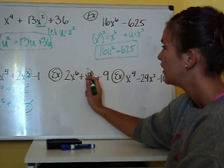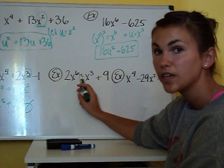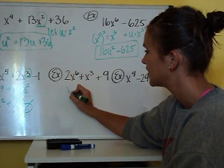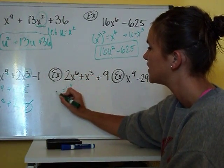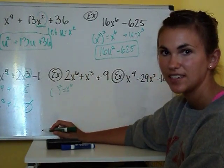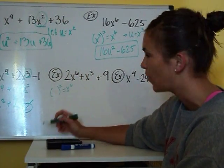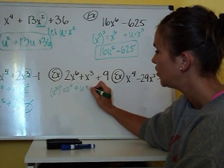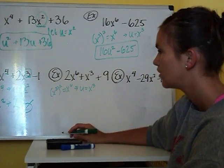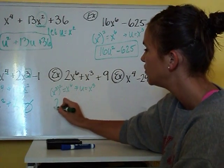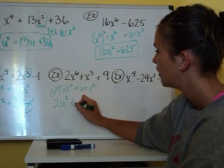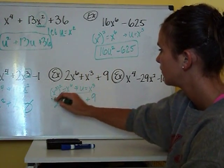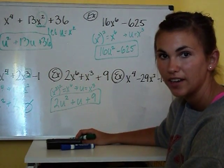Here with this example, 3 is half of 6, so we're going to be able to put this one in quadratic form. We need to figure out what we can square to get X to the sixth — going backwards using our power of a power property, that is X cubed. So our U is going to be X cubed. That gives us 2U squared plus U plus 9, and that is our quadratic form.